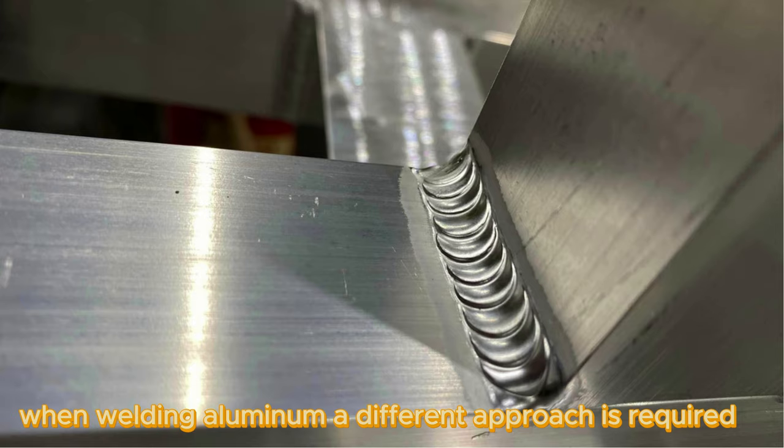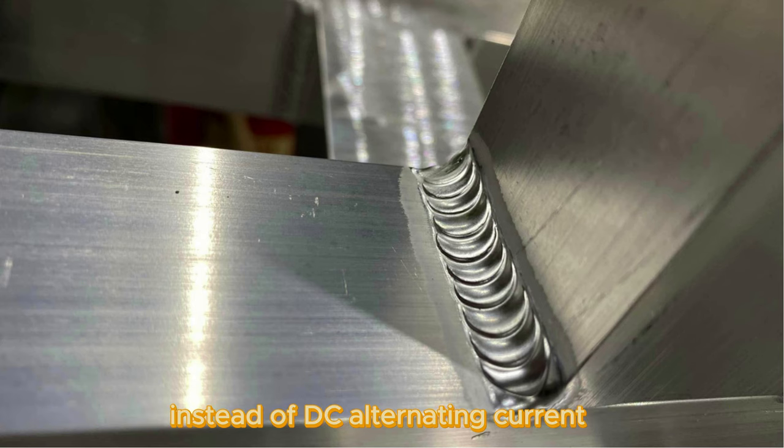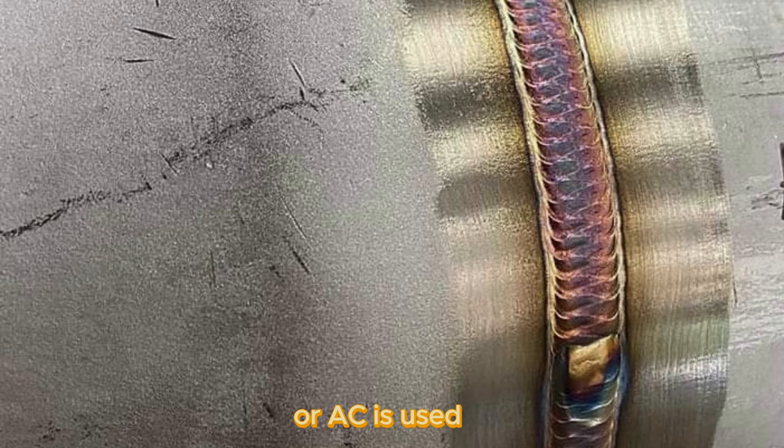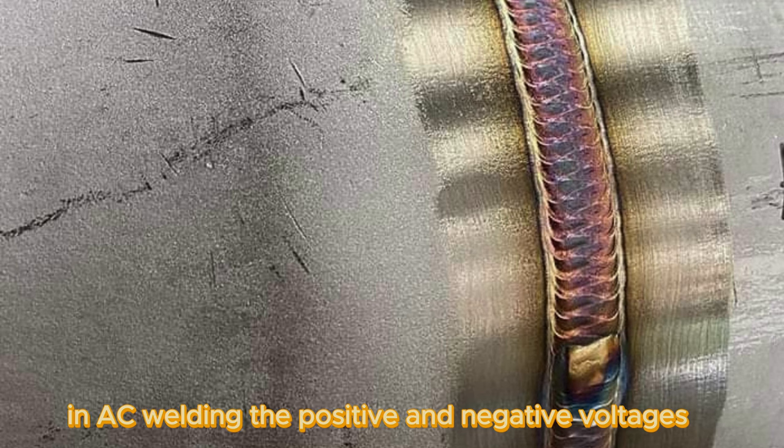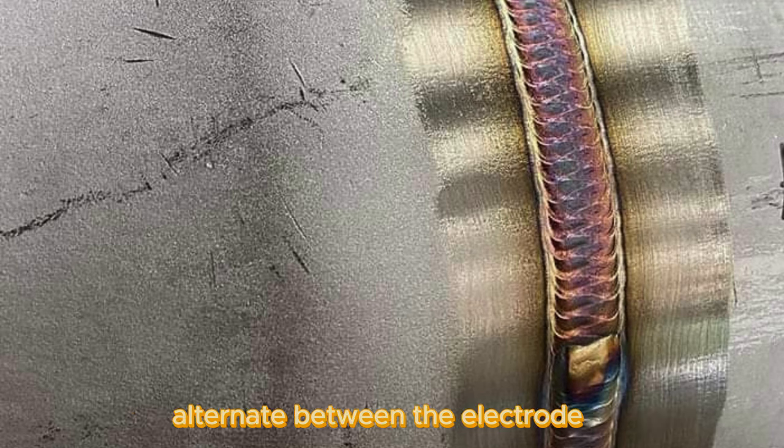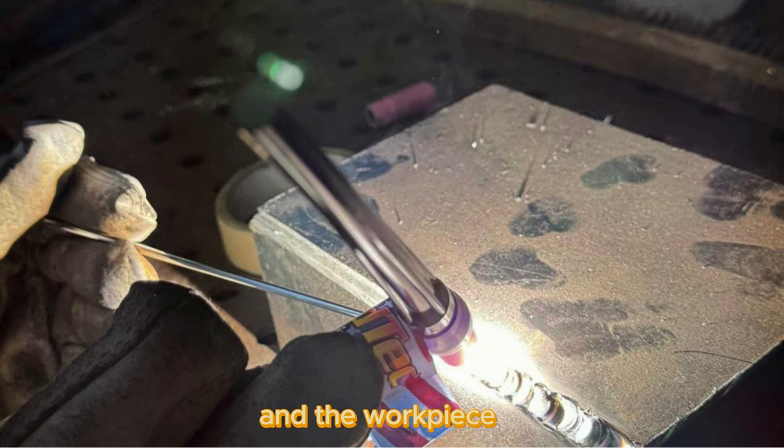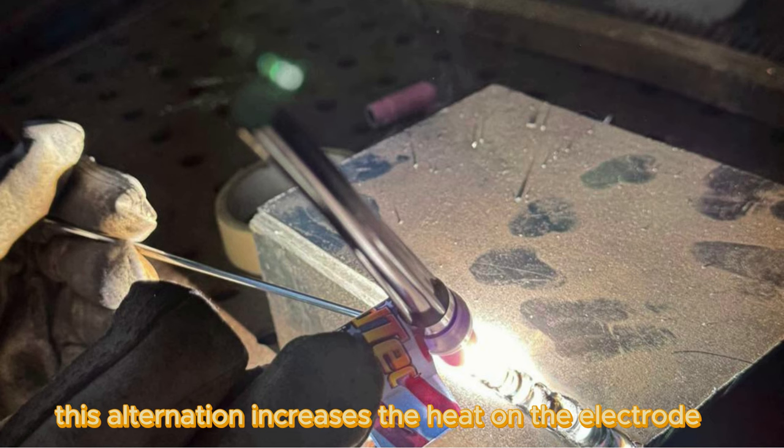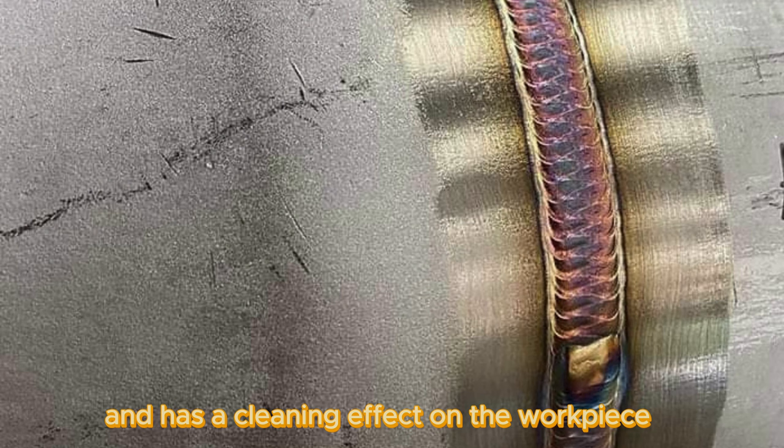When welding aluminum, a different approach is required. Instead of DC, alternating current or AC is used. In AC welding, the positive and negative voltages alternate between the electrode and the workpiece. This alternation increases the heat on the electrode and has a cleaning effect on the workpiece.